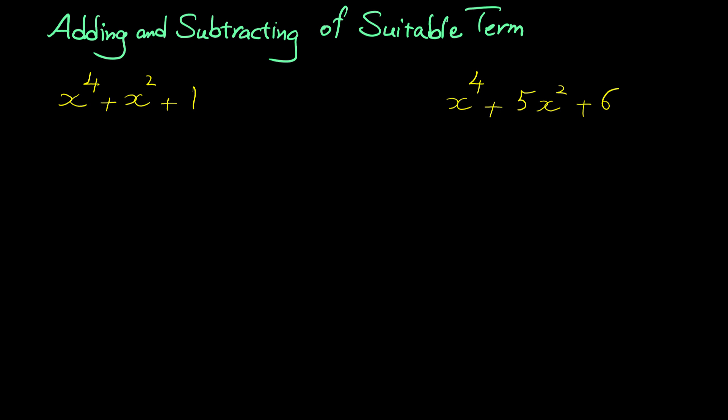In this video we want to learn one of the advanced factoring techniques: adding and subtracting a suitable term. Look at these two examples: x to the fourth plus x squared plus one, and x to the fourth plus five x squared plus six. If you pay attention, these are trinomials, and so maybe you think that since these are trinomials, we can factor them.